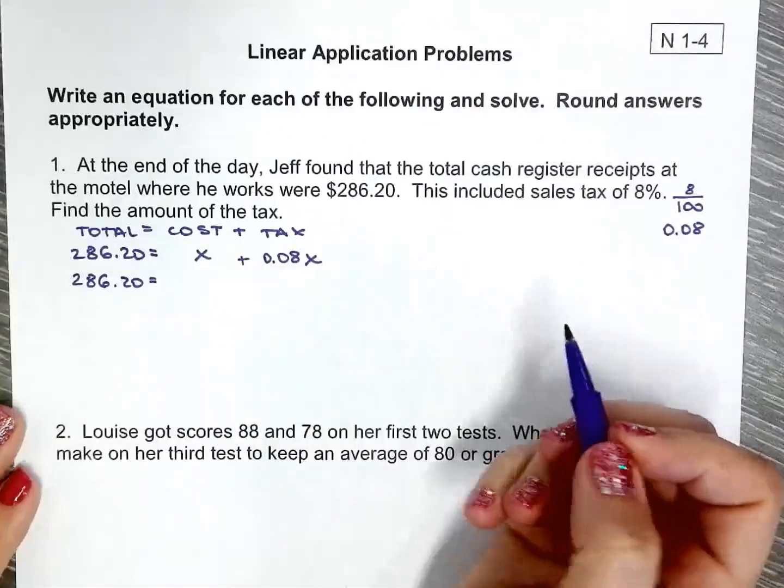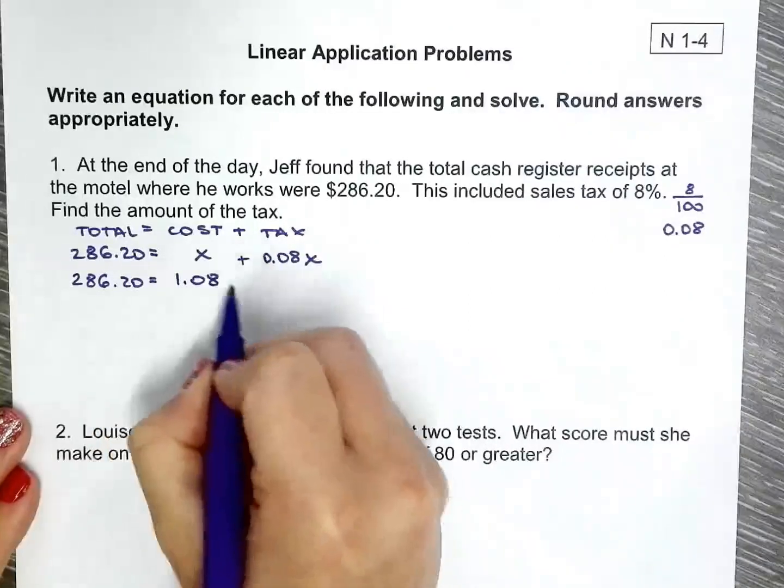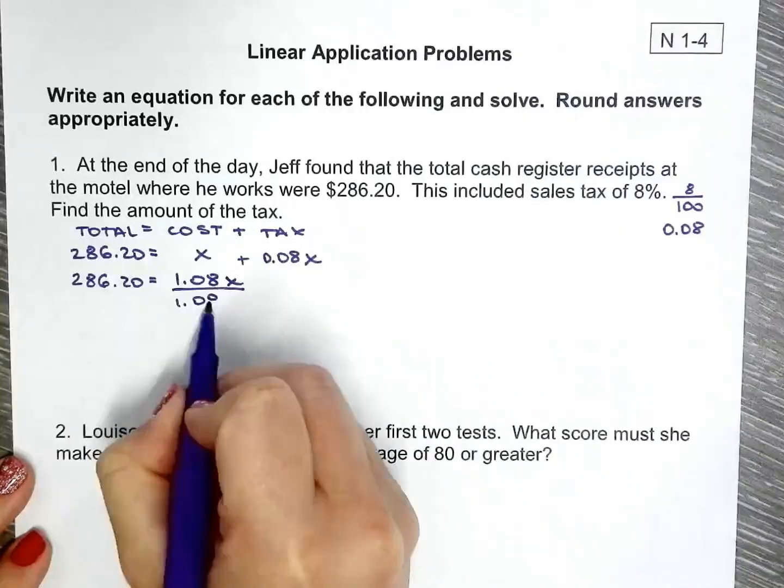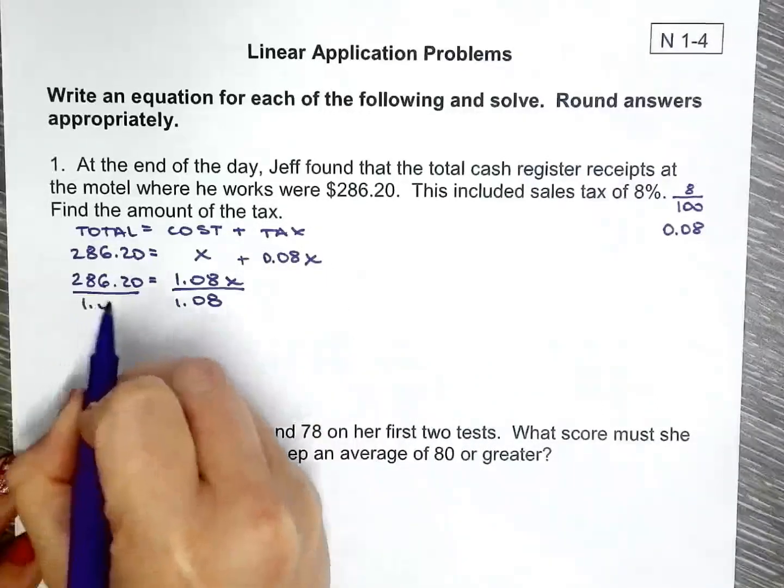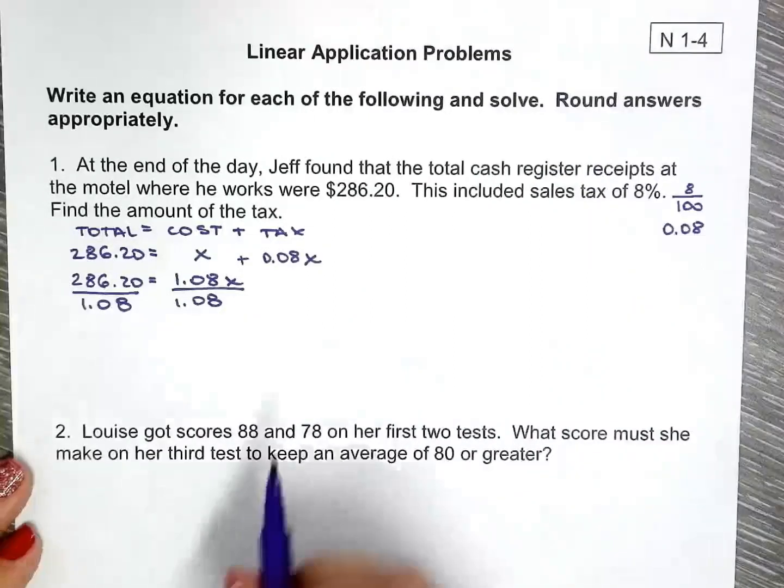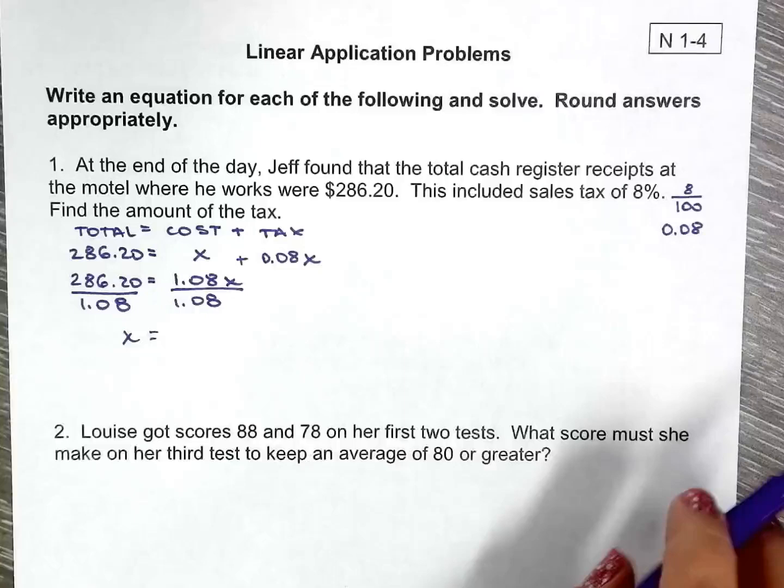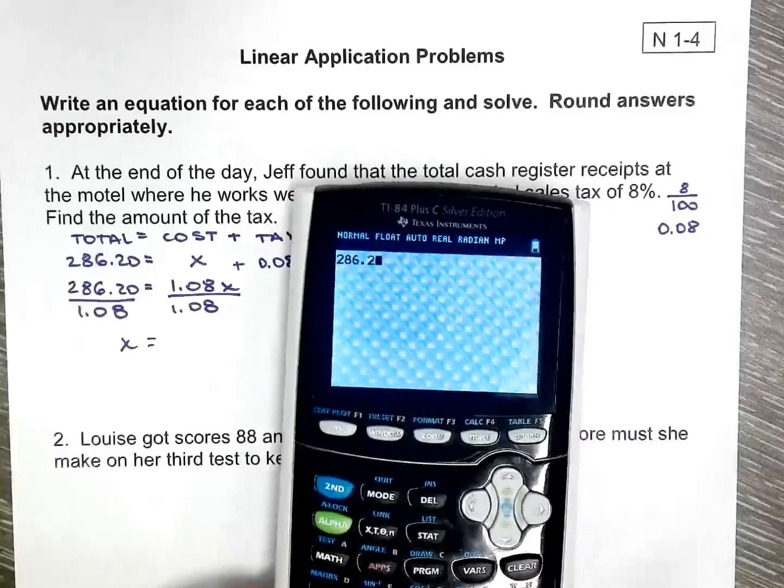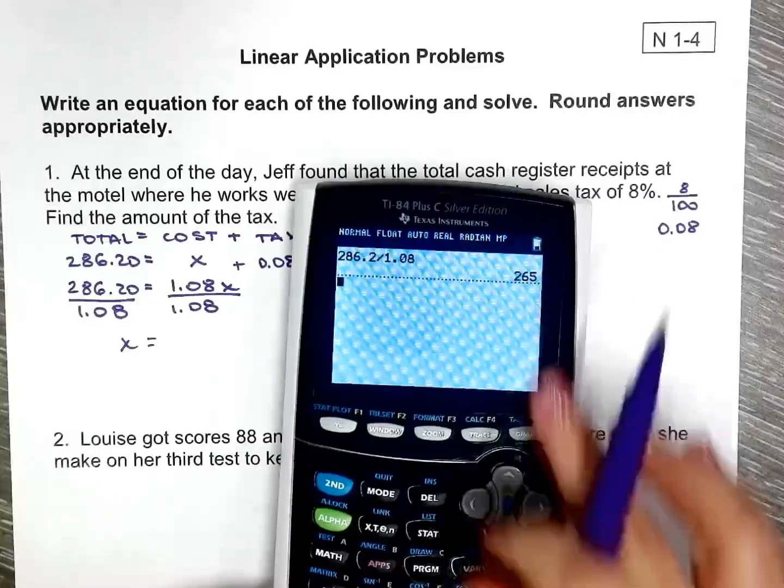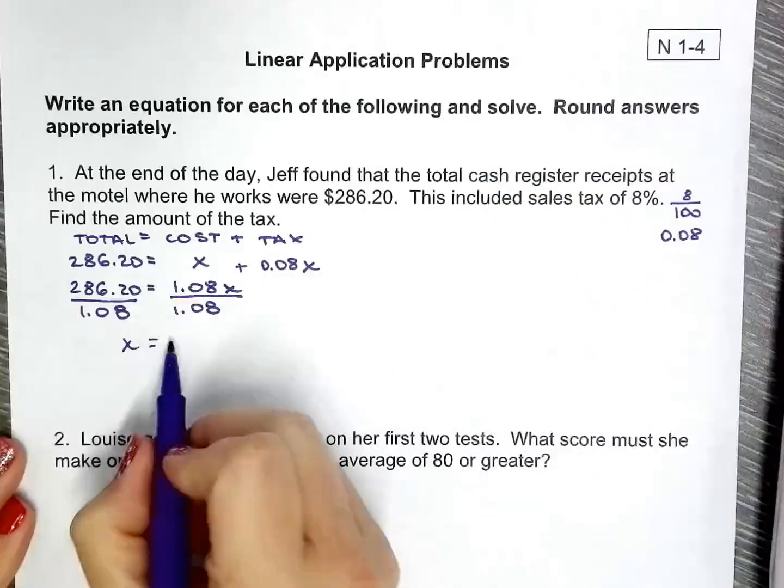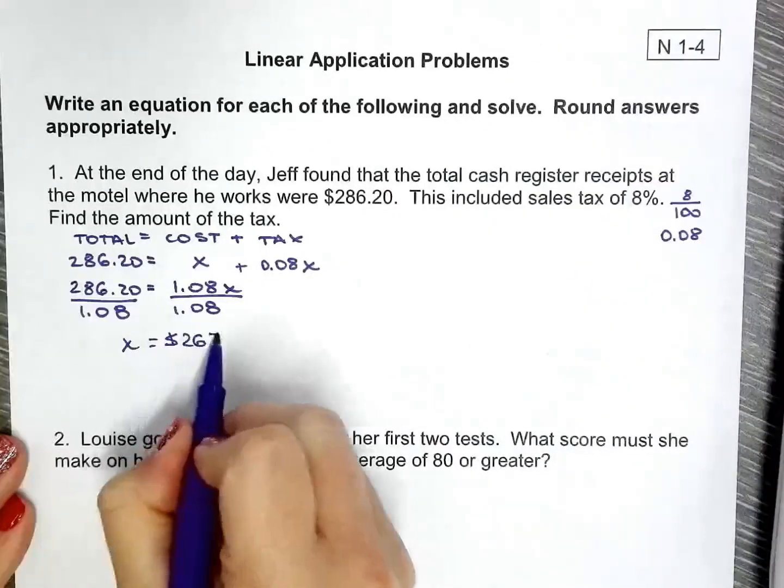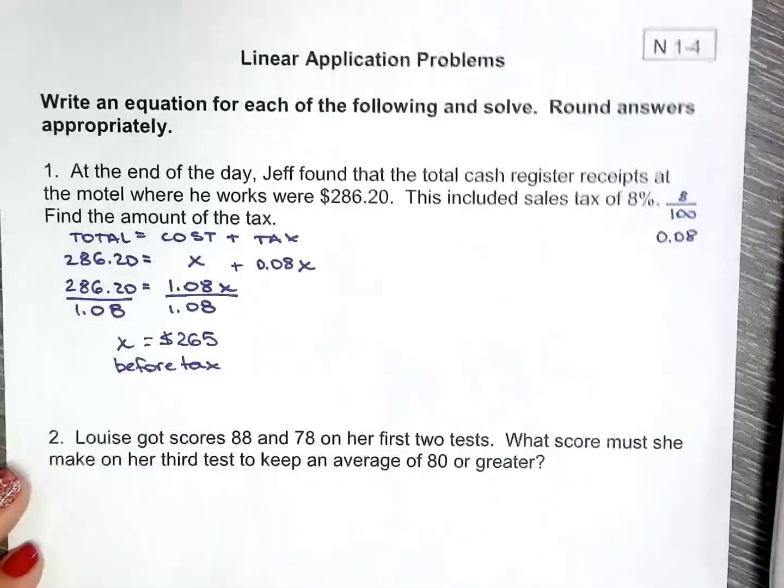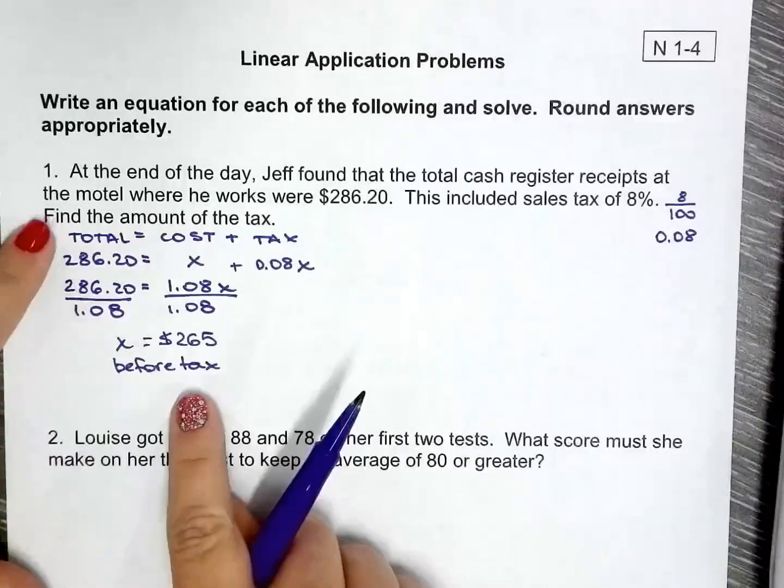And this is not the only way to do it, but that's an easy way for you to get started. At this point, combine these two, then you're isolating X. Divide both sides by 1.08. $286.20 divided by that, you got $265. What does that mean? It's $265 before tax. That's not what the question is asking.